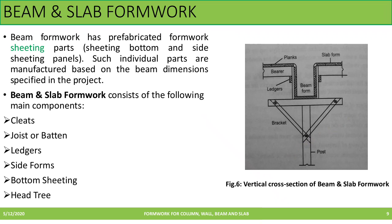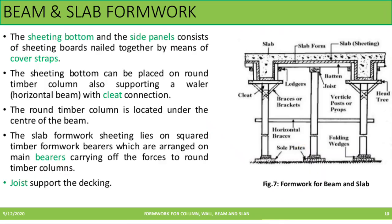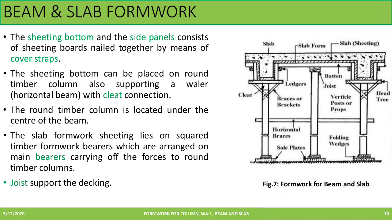Next one is beam and slab formwork. Beam formwork has prefabricated formwork sheeting at the bottom and also in the side panels, manufactured according to specification. The major components are cleats, joist or batten, ledgers, side forms, bottom sheeting and head tree. The sheeting bottom and side panels consist of sheeting boards nailed together by means of cover straps. The sheeting bottom can be placed on round timber with a cleat connection, and the round timber is located at the centre of the beam. The slab formwork sheeting lies on square timber formwork bearers, which are arranged on main bearers carrying the forces to round timber columns — that is, slab formwork is connected to main bearers. The joist supports the deck of the slab.